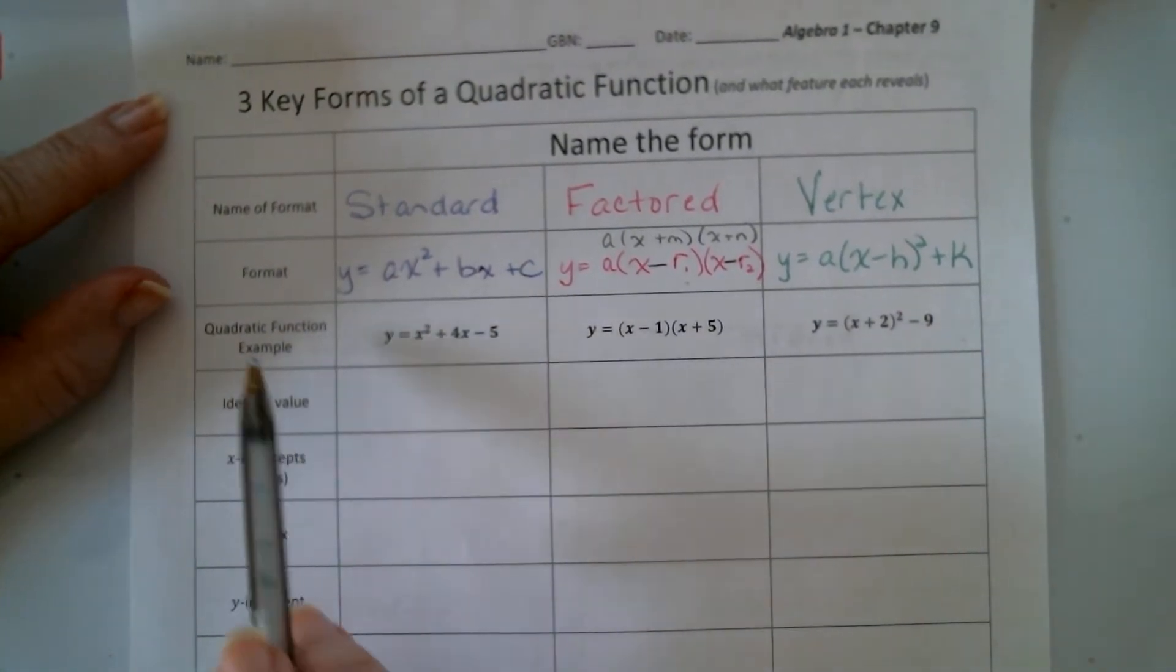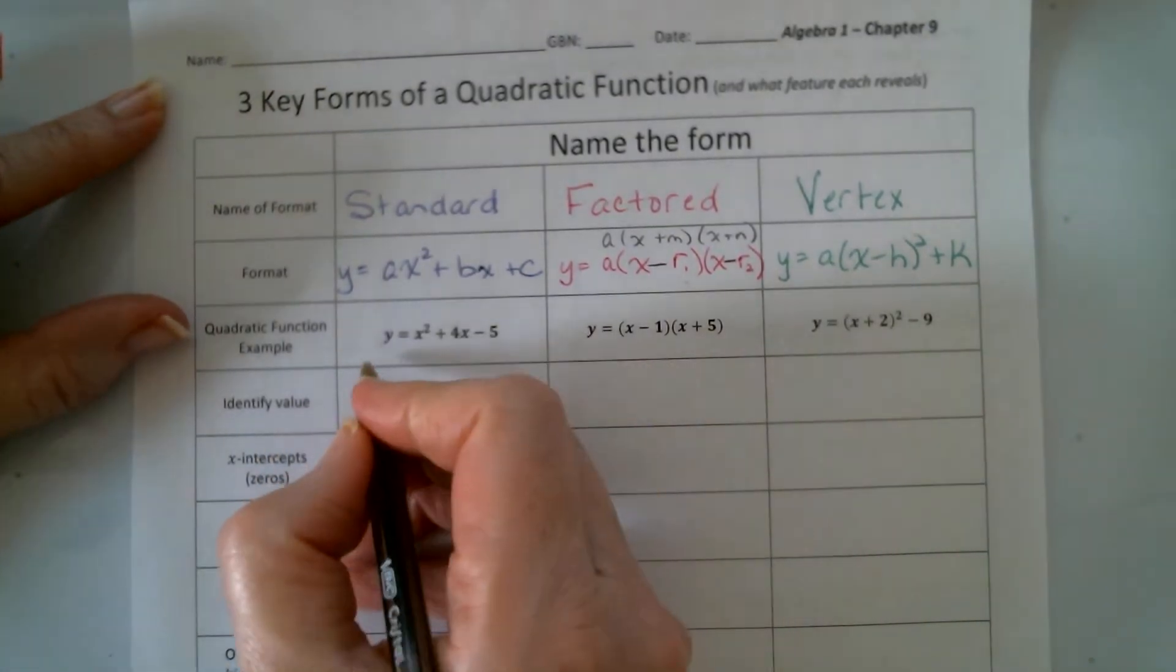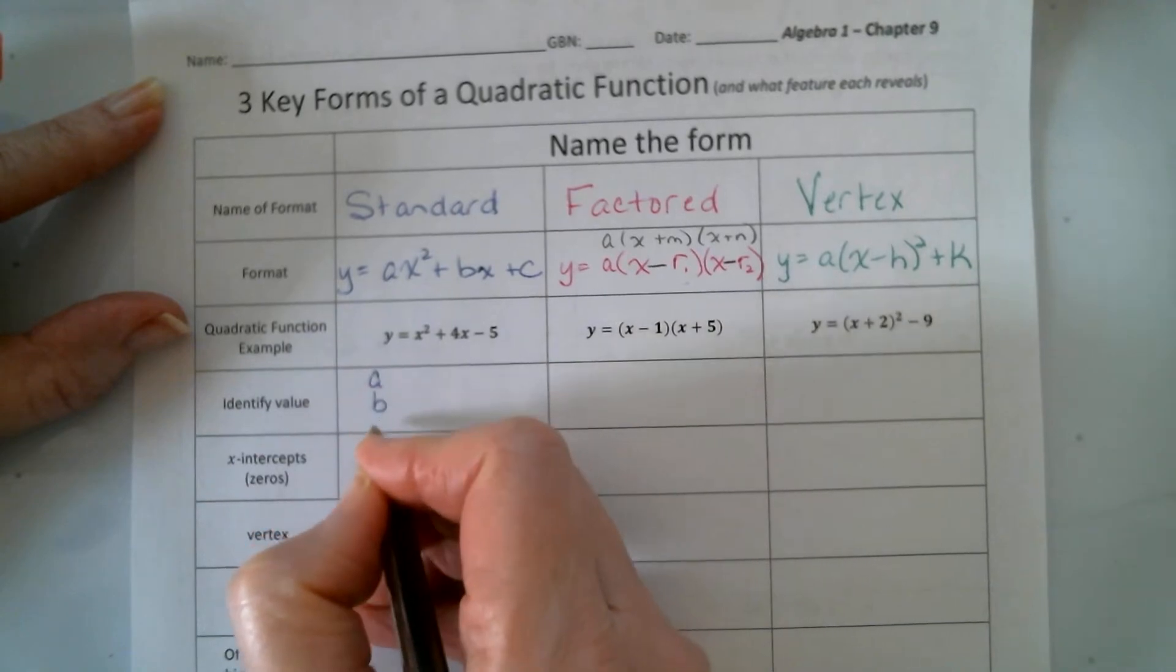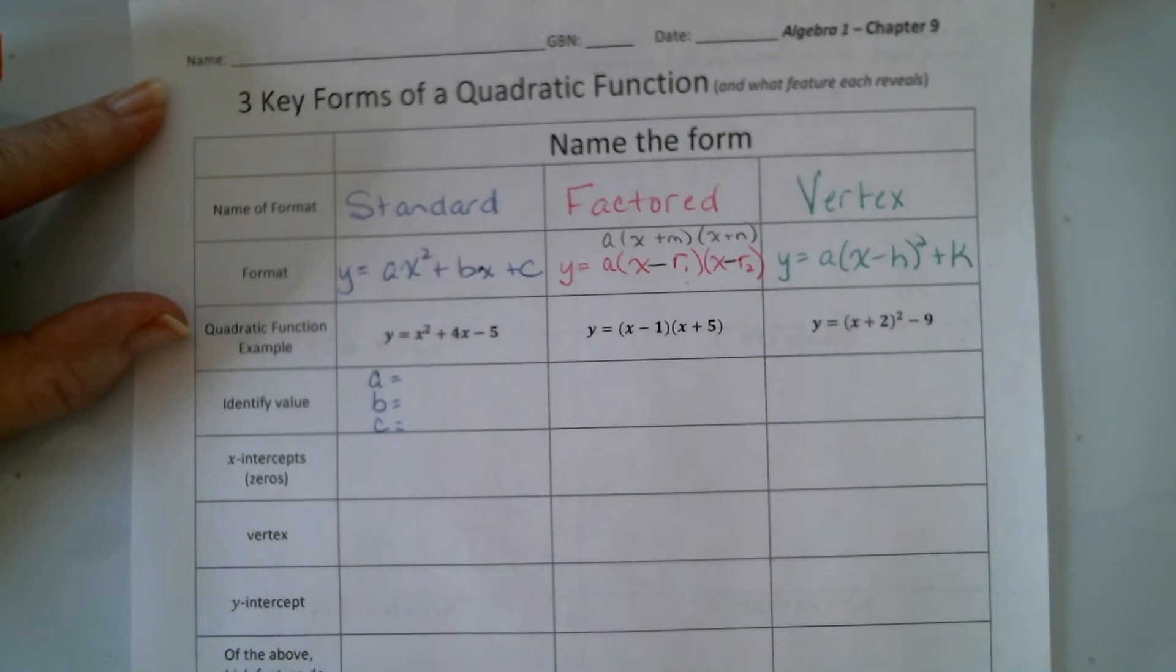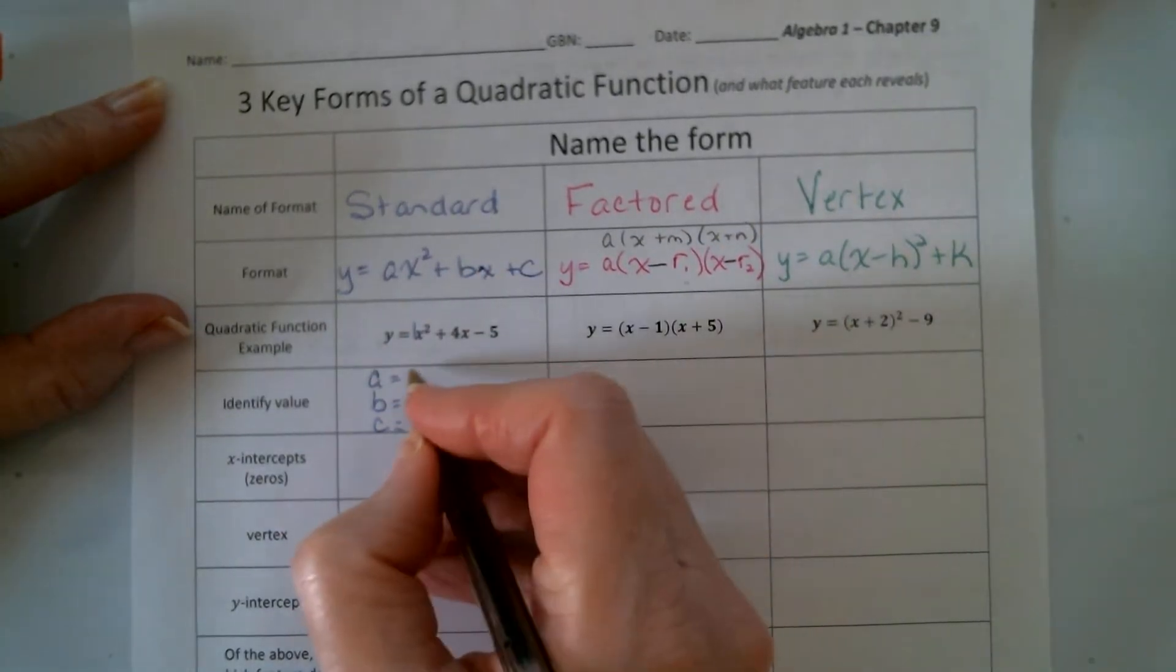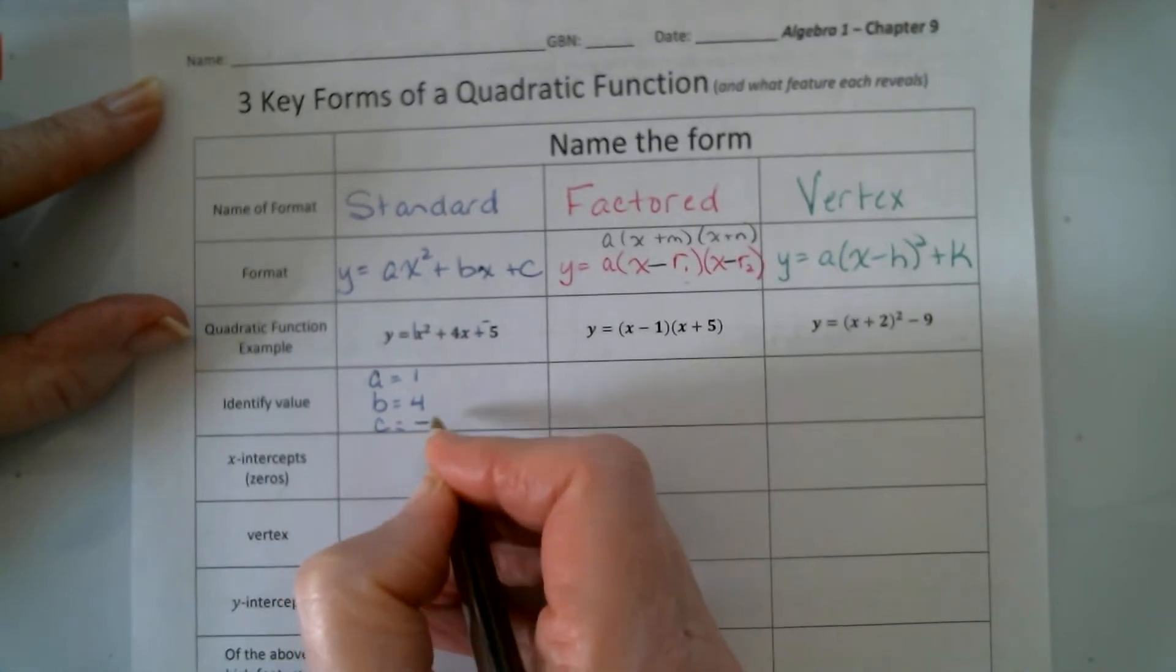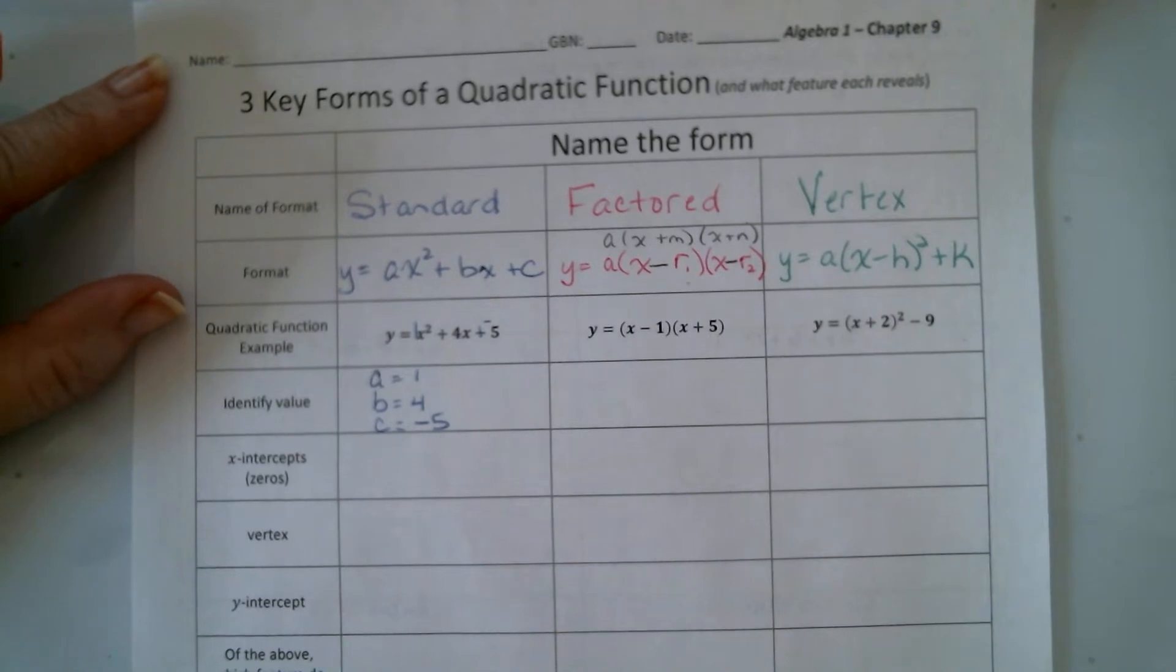So given these three forms, if we use this specific example, what I'm asking here is if we can identify some numbers here, values for a, b, and c, all right? So let's see if you can do that. We'll see if we agree here. And because this is plus, that must be negative 5, right? Okay, hopefully we're doing all right with that.